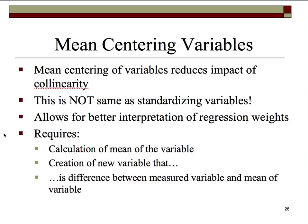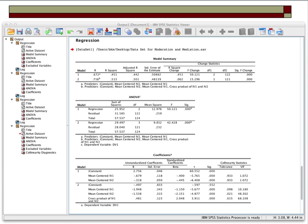This does require that you calculate the mean of the variable, which is easy enough in any software package. Then you'll actually go in and create new variables that are the difference between the measured variable and the mean. For IV1 and IV2, we find the mean for all subjects and then arithmetically create a new term called IV1 mean-centered — every subject's score on IV1 subtracted from the mean of IV1. We'll do that also for IV2.